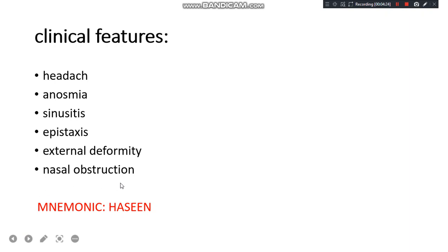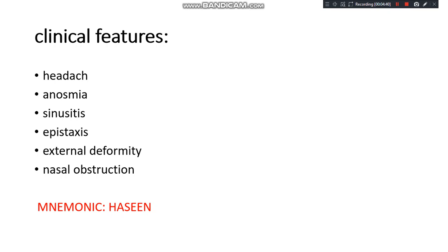There is also middle ear infection as a complication. The mnemonic to remember all these features is M-HASEIN. Like a middle child is always Hasein — if you are a middle child, you will remember this mnemonic.